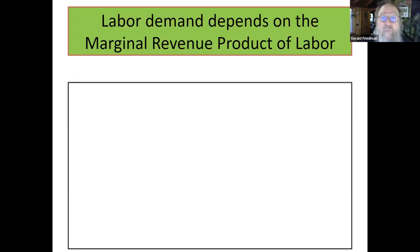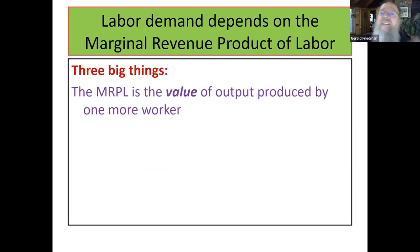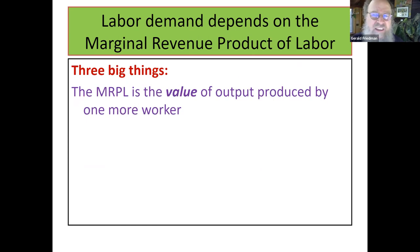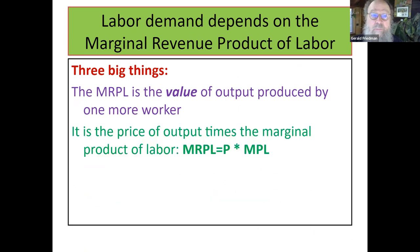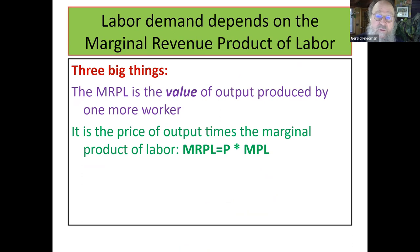Labor demand depends on the marginal revenue product of labor. Marginal revenue product is the value of output — you don't pay your workers in stuff, you pay them in dollars. So it's the value of the output produced by one more worker: the price of output times the quantity of stuff the workers produce. So it's price times the marginal product of labor.